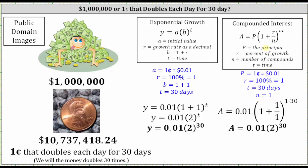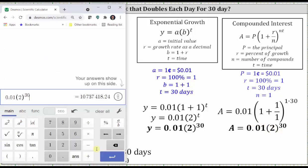So subbing the values into our compound interest formula, notice how we get exactly the same result on the right side, 0.01 times two to the power of 30. And if we go to the calculator, of course, we get the same amount of $10,737,418.24.